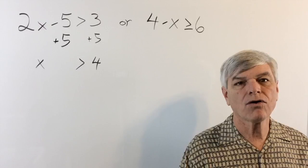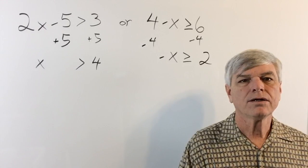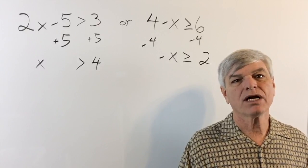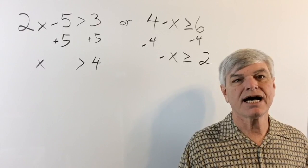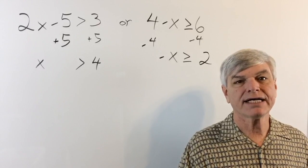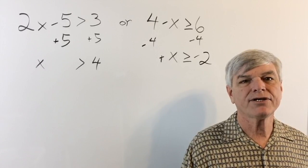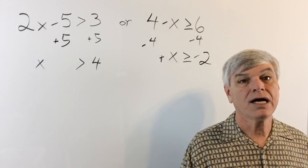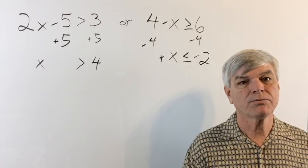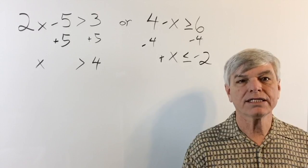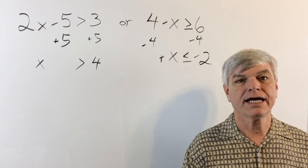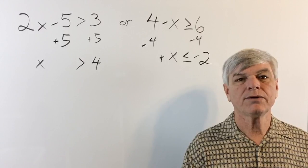In the second equation, we move 4 over, then multiply both sides by negative 1. Rather than writing negative 1 on both sides, we simply change the sign of the x and the 2 — negative x becomes positive x and positive 2 becomes negative 2. But remember: when we multiply by negative 1, the inequality sign has to flip direction. So x was greater than, now x is less than or equal to negative 2.